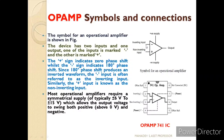If we give an input to the negative terminal, the output will be 180 degree phase shifted. If we give the input to the positive terminal, there will be no phase shift across the output because it is positive and remains in the same phase. Generally, the operational amplifier works with a power supply in the range of plus or minus 6 volts to plus or minus 15 volts. The frequently used IC of the op-amp is the μA741 IC.